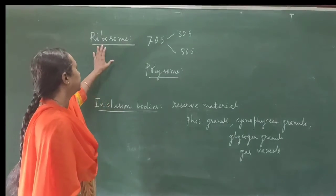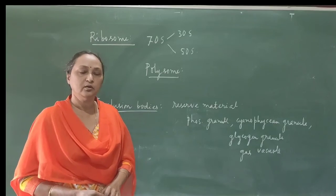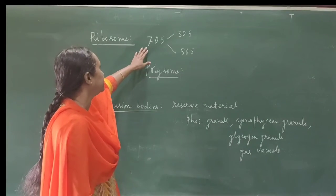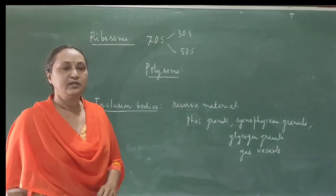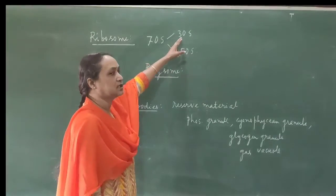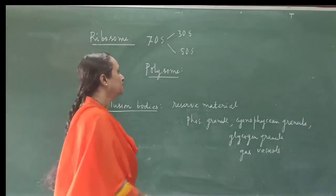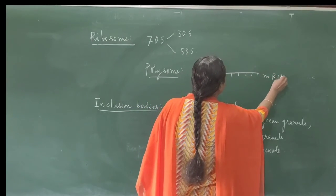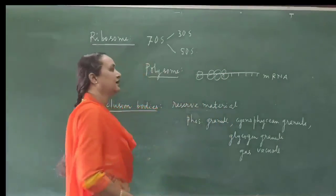The only cell organelle present in bacterial cells is the ribosome — the rest of the cell organelles are missing, and mesosome carries the role of all different organelles. The function of the ribosome is protein synthesis. The type of ribosome present in bacterial cells is called the 70S ribosome. There are two types of ribosome: 80S ribosome is found in eukaryotic cells, and 70S ribosome is present in prokaryotic cells. The 70S ribosome can be dissociated into two subunits — 30S and 50S. When many ribosomes are present together on a messenger RNA molecule, that is called a polysome.